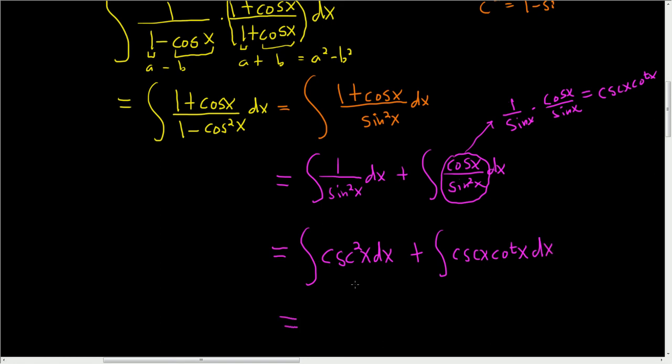And you have to think, what's a function whose derivative is cosecant squared? Well, the derivative of cotangent is negative cosecant squared. We don't have a negative, so this will be negative cotangent x.